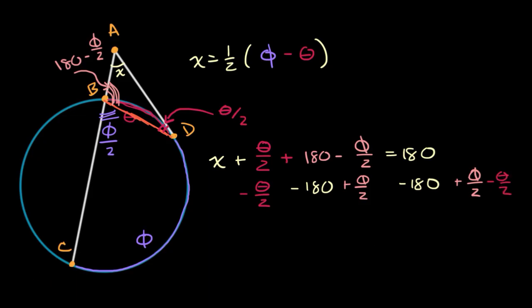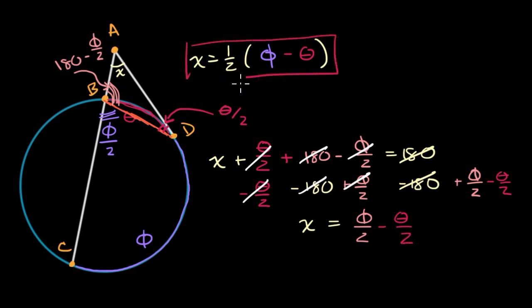And then what do I get? Well, that cancels with that. That cancels with that. That cancels with that. We're left with just an x on the left-hand side, and on the right-hand side, that cancels with that, that cancels with that, and we are left with the result that we were hoping to get. We get phi over two, phi over two minus theta over two. If we just factor out a one half, we get exactly what we set out to prove.